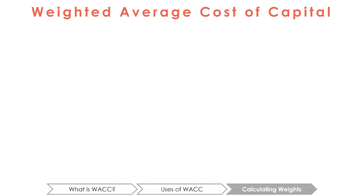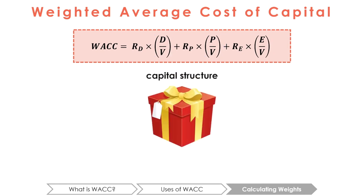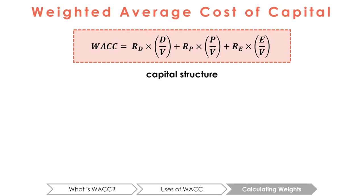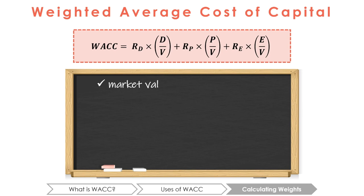Let's revisit the WACC formula again. Now we will learn how to calculate the weights of each component of the capital structure. For now, the capital structure will be given to you. A company may express its capital structure as follows: we have $40 million of debt and $50 million of common shares. Or they may express it as a debt-to-equity ratio of 0.8. Before we start calculating, always remember to use the market value of the debt and equity, never the book values.